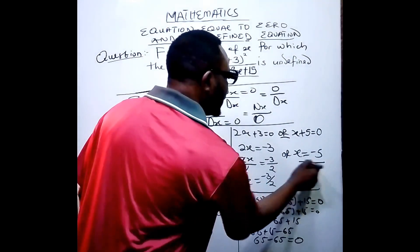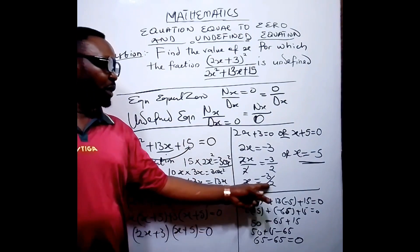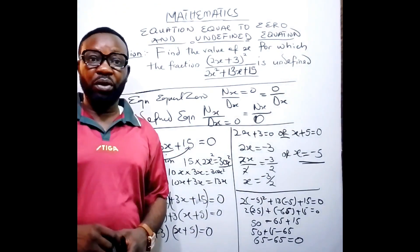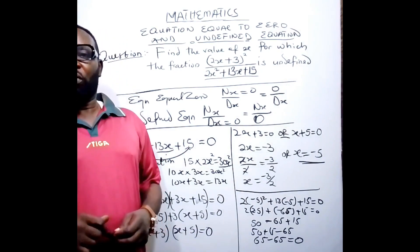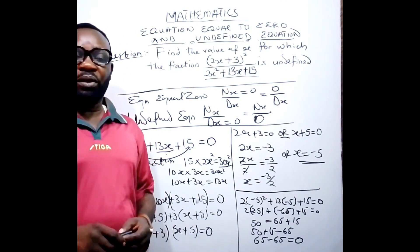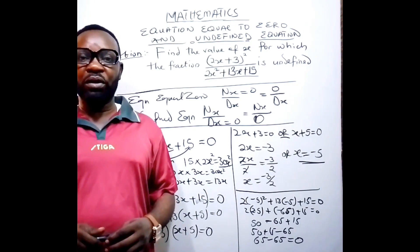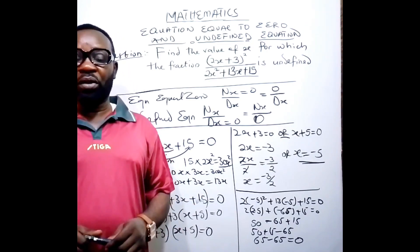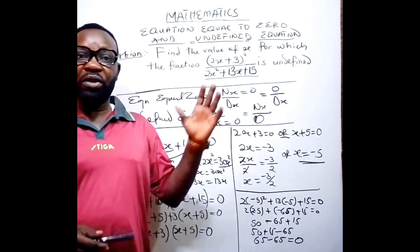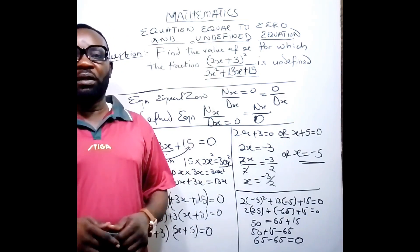So the value that makes the fraction undefined is x = -5. You can also check x = -3/2 on your own. Thank you for watching this video. Please subscribe to the channel so you can access more videos on different math questions and different classes. We have lectures on whole topics that you can get there as well.